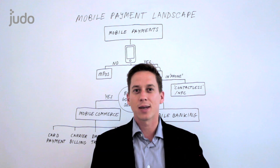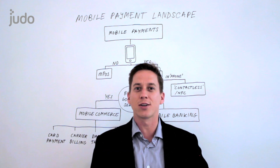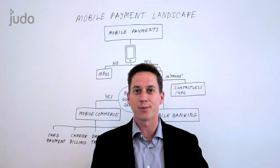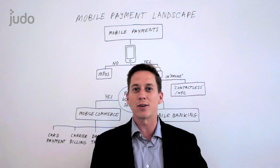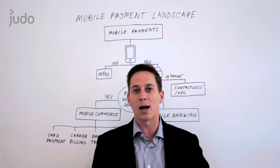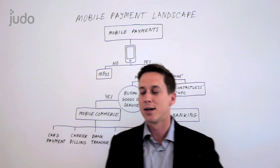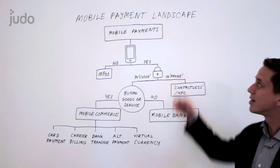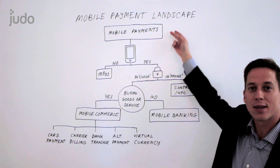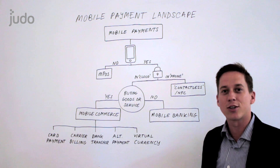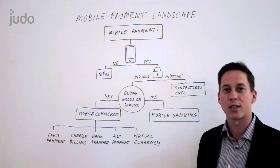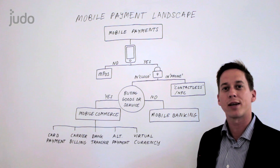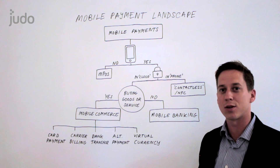Welcome back to The Judo Wall. I'm Dennis Jones and today I want to talk to you about one of the most confusing terms I've heard in many years. That term is at the heart of what we do at Judo, but I want to dispel some myths and explain the differences and get some terminology right across the board. That word is 'mobile payments,' and I hear it being used in so many different ways — part of that is because mobile is becoming such a force for change in the industry that a lot of people want to have their solution associated with a good word.